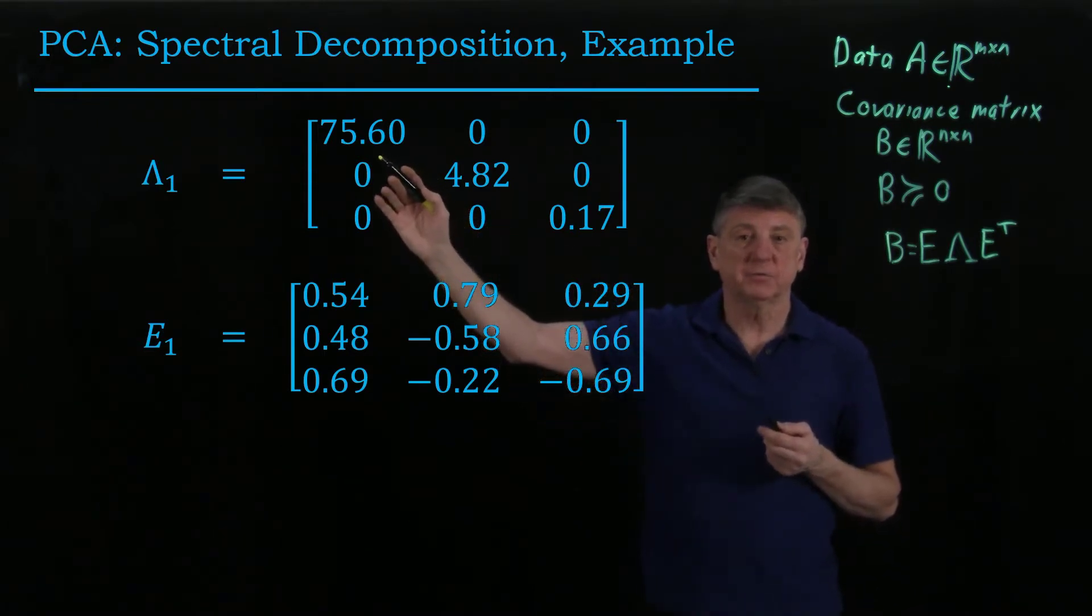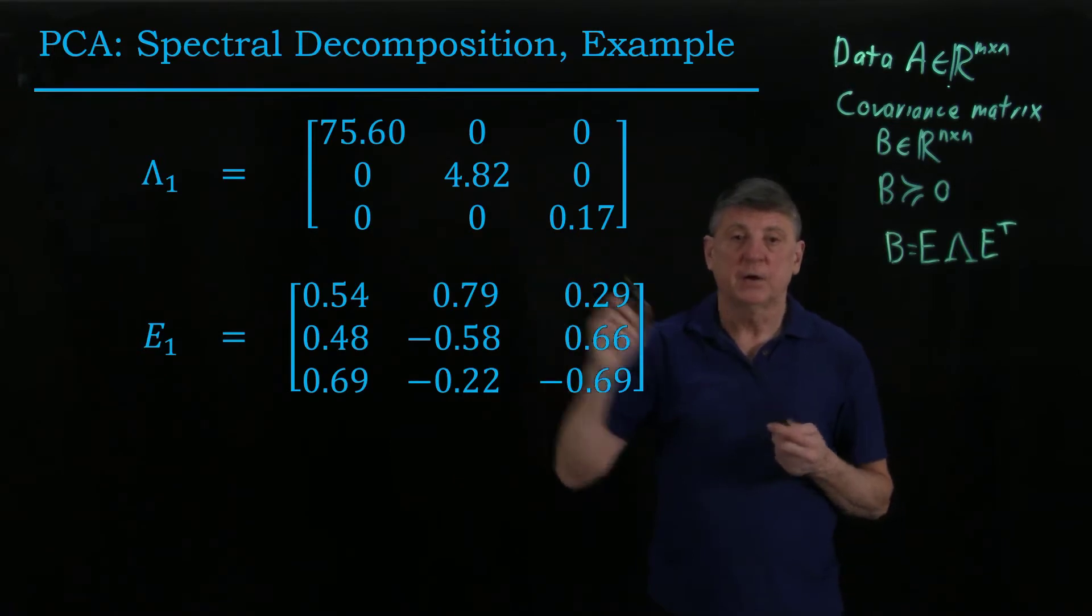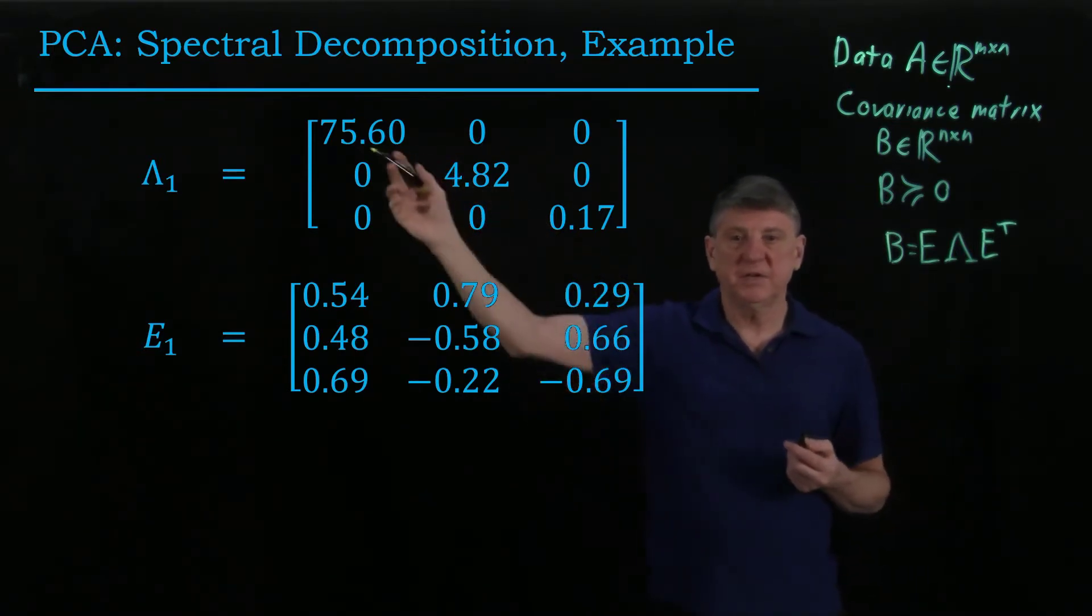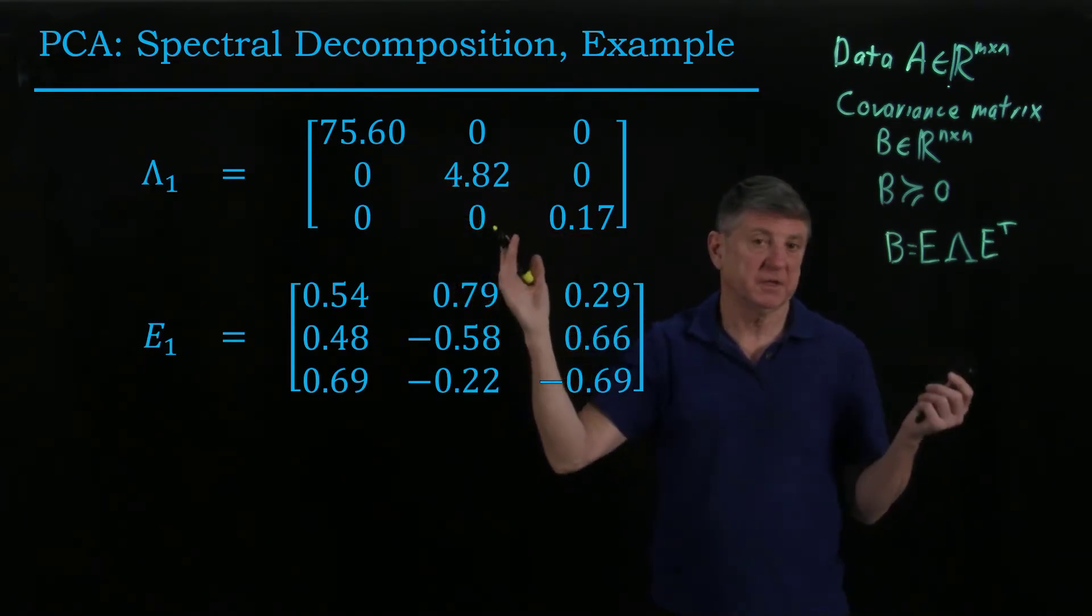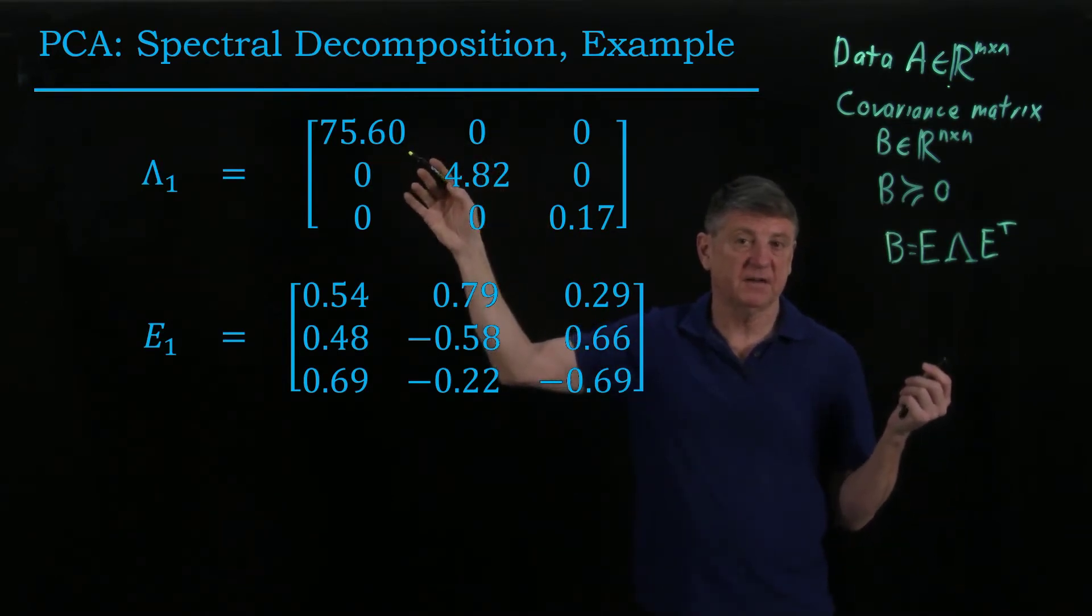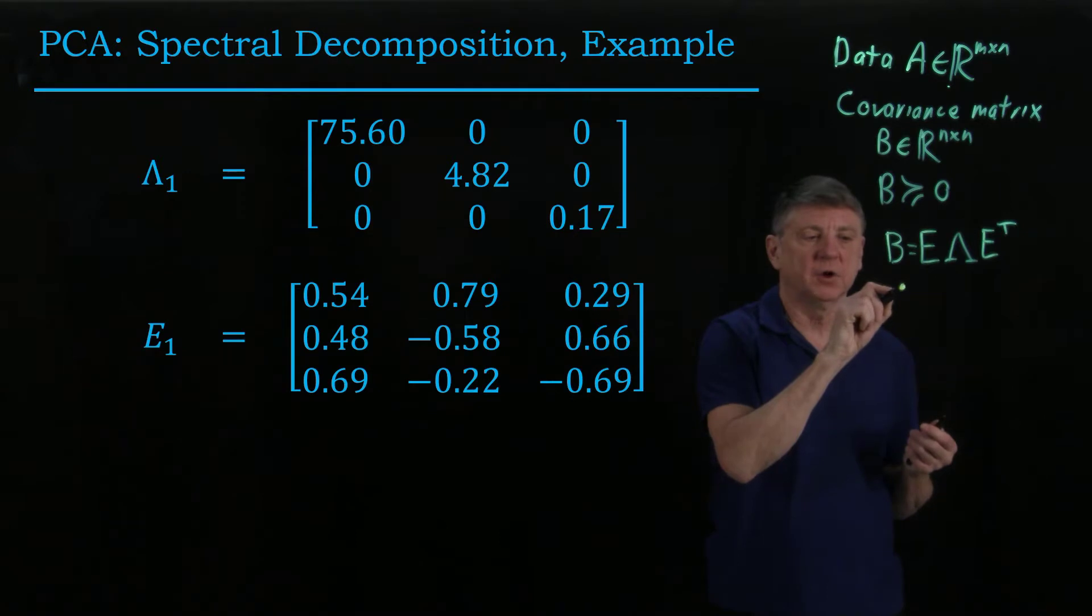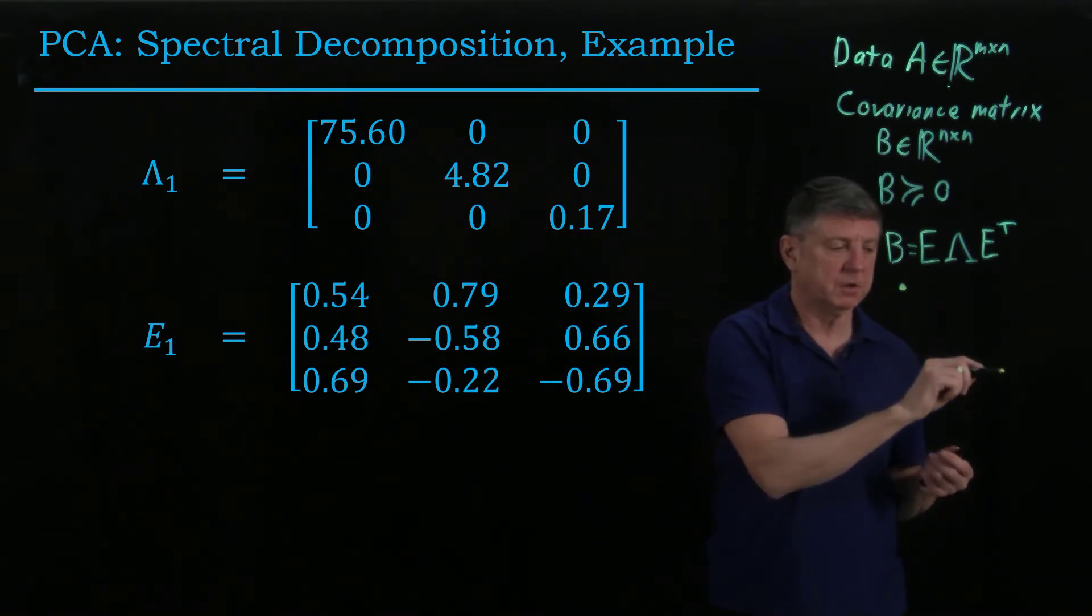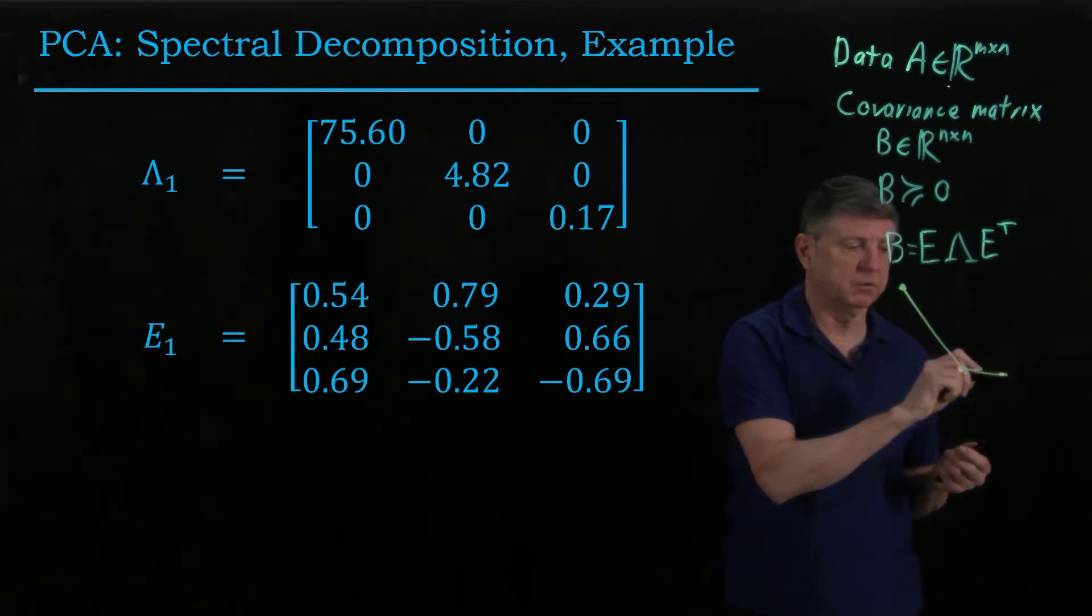These are the eigenvalues, roughly 76, 5, and 0.2. Now if I was to do a scree plot of those, I would add them up, and that would be something like 76 plus 5, so it's going to be something like 81, and 76 over 81 is going to be a very large number. So we would have a large value here, and then the next one would be very small, and then very small, and our scree plot would look something like that.